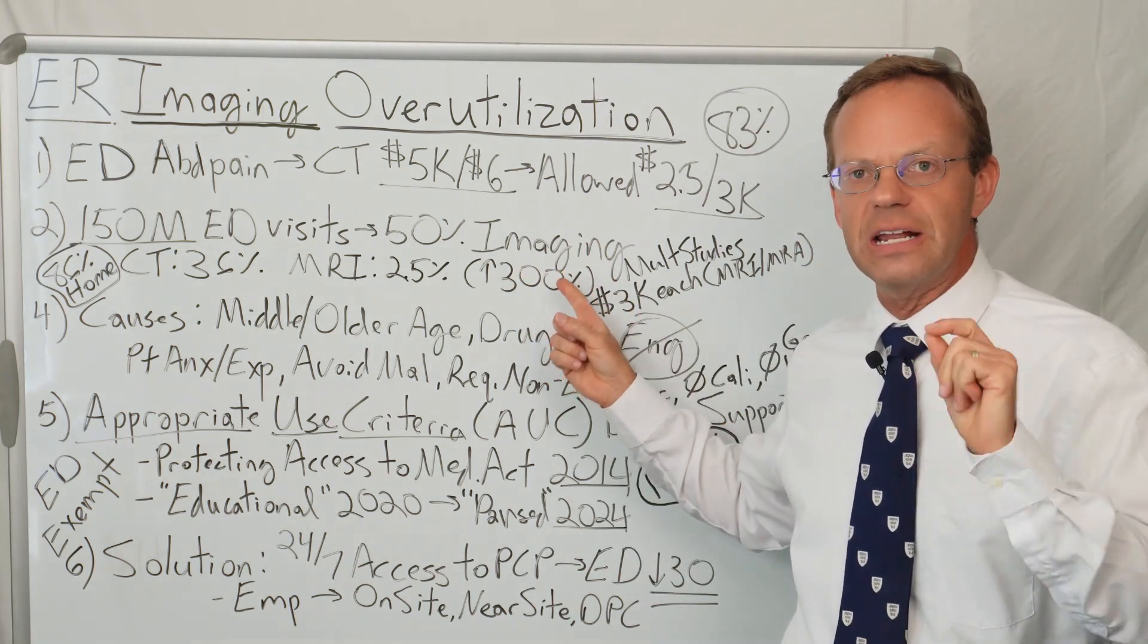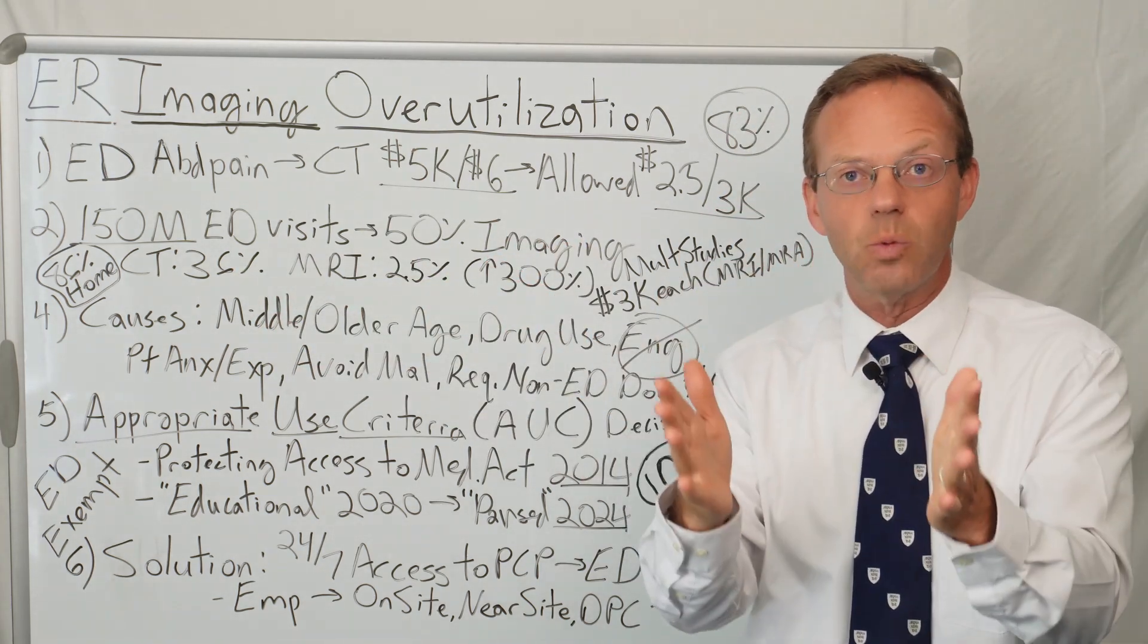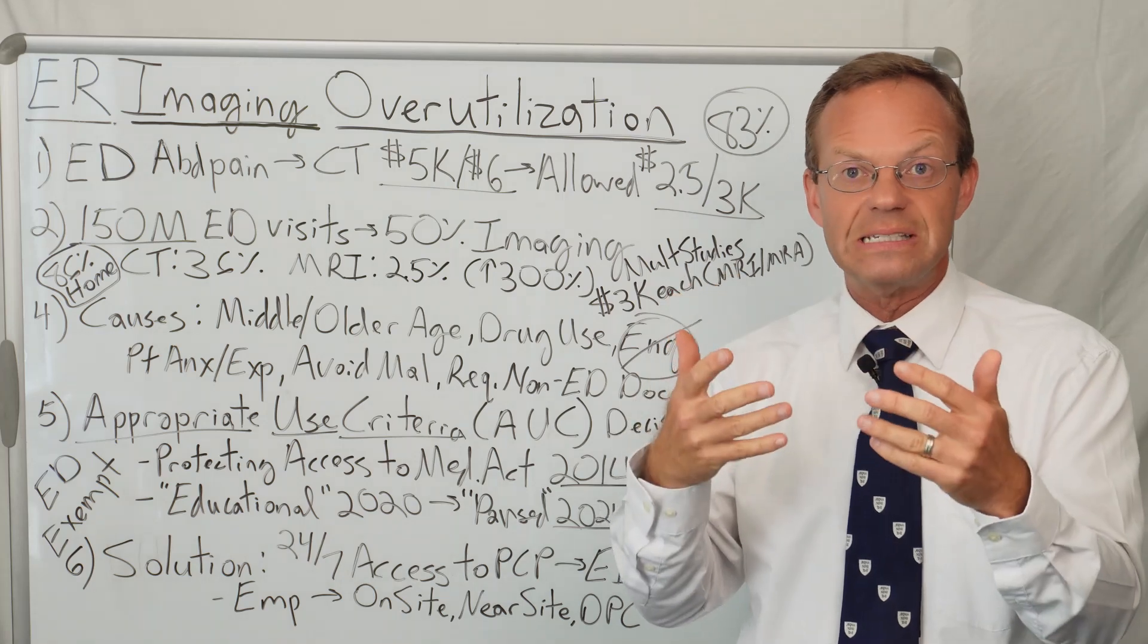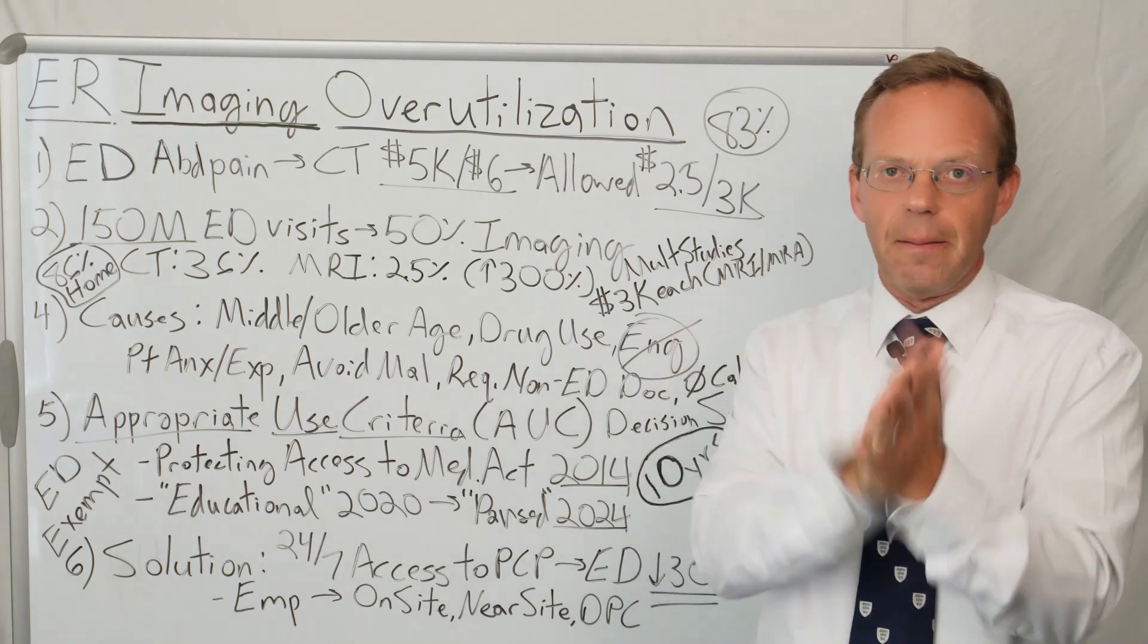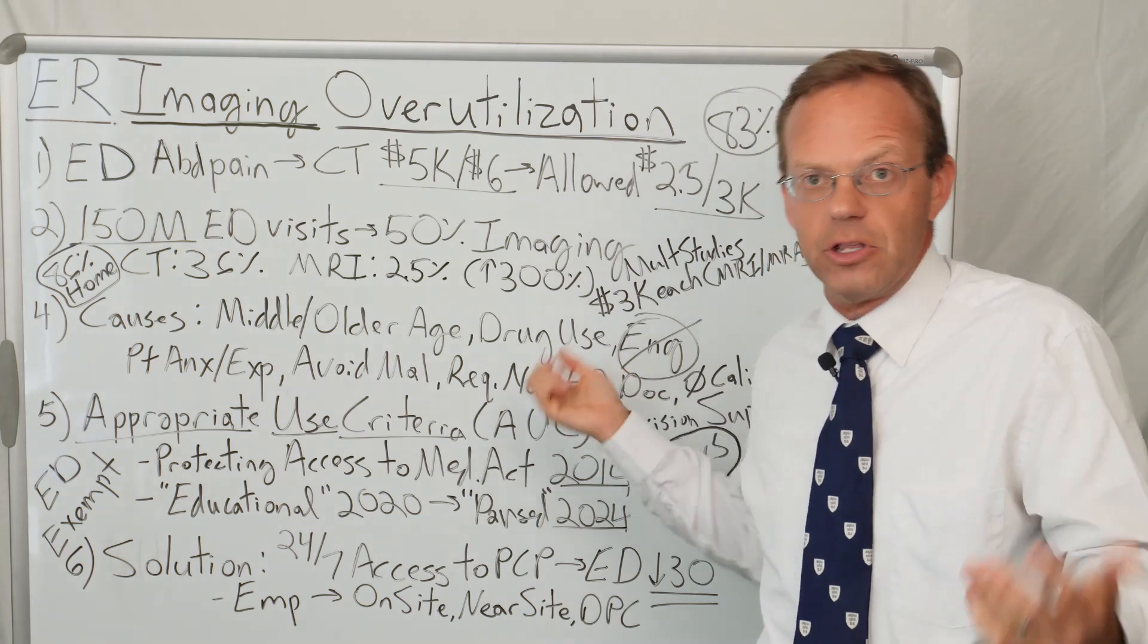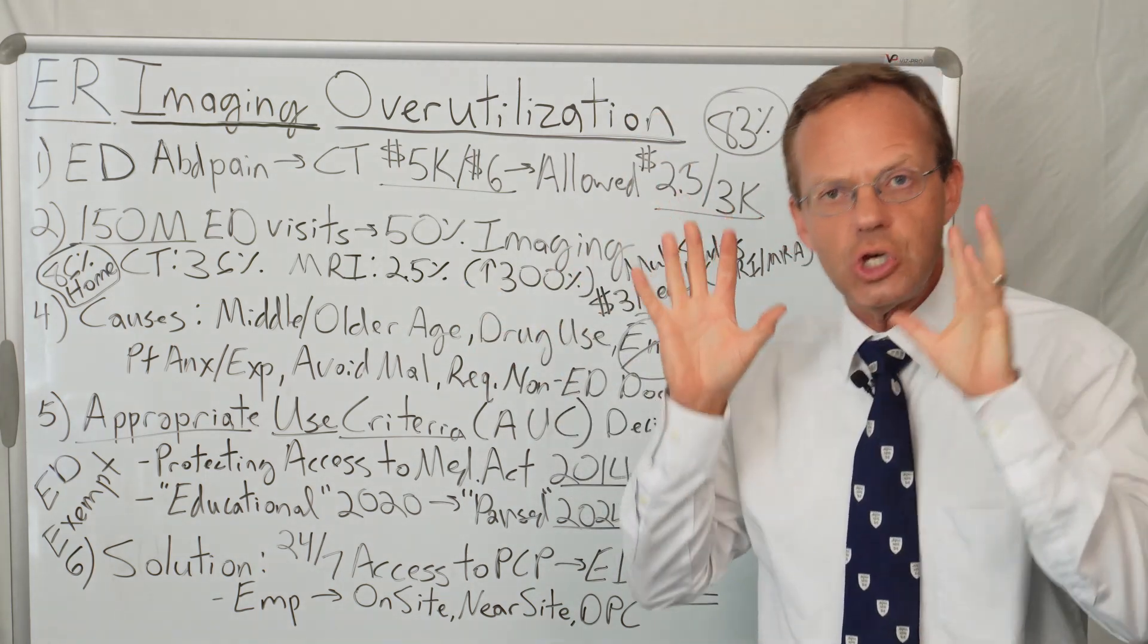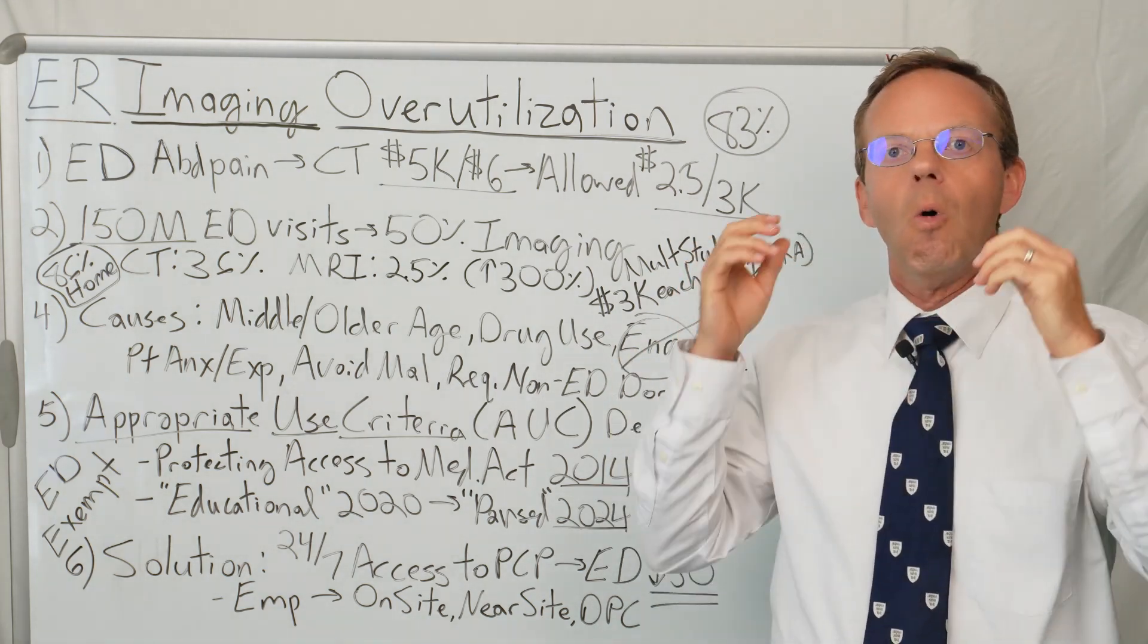According to one study, there was a 300% increase in CT scans and MRIs. And sometimes when you're scanned, it's not just one study, it's multiple scans. So if you have an MRI of your brain, oftentimes they'll also do what's called an MRA or Magnetic Resonance Angiogram. You're just in the MRI once, but they're doing the MRI and the MRA, each of which might have their own $3,000 allowed amount. You might have $6,000 of MRIs done in the ER. So there's been this huge push for more frequent advanced imaging in the ER.